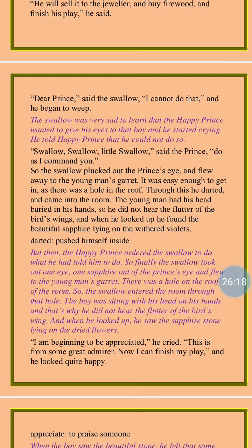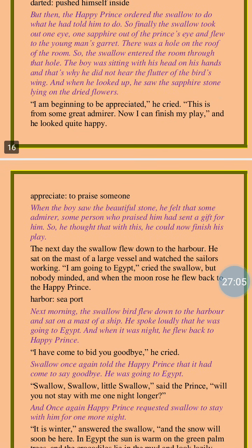Through the hole he darted and came into the room. The young man had his head buried in his hands, so he did not hear the flutter of the bird's wings, and when he looked up he found the beautiful sapphire lying on the withered violets. When the swallow bird entered, there was an easy way to get inside the garret through a hole in the roof. The young man had his head buried in his hands and did not notice the fluttering sound of the bird's wings. When he looked up, he found the beautiful sapphire there and got surprised.